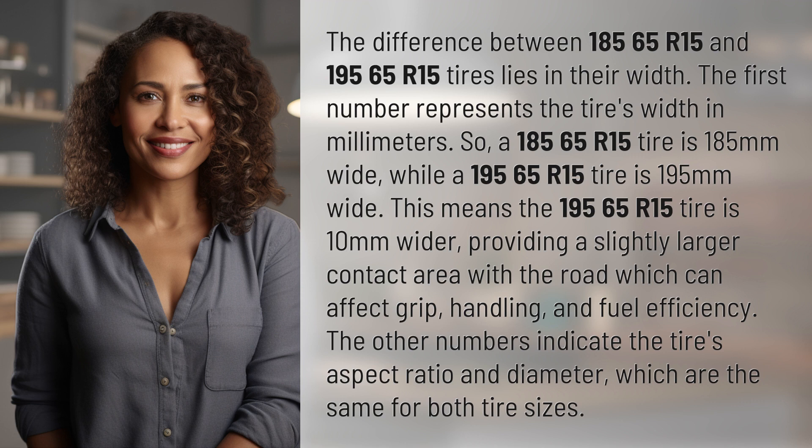This means the 195/65R15 tire is 10 millimeters wider, providing a slightly larger contact area with the road, which can affect grip, handling, and fuel efficiency. The other numbers indicate the tire's aspect ratio and diameter, which are the same for both tire sizes.